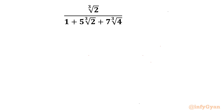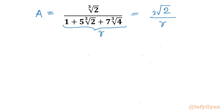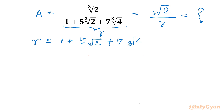I will presume the given expression as capital A, and let us call the denominator as R. So we are trying to find out cube root of 2 divided by R. Now let us write our substitution: small r equals 1 plus 5 times cube root of 2 plus 7 times cube root of 4.